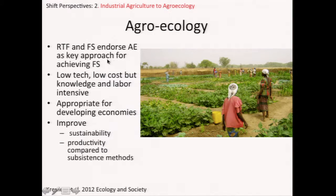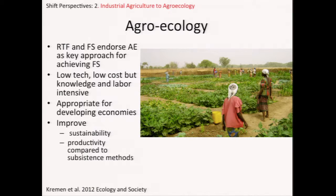I want to talk about shifting perspectives, moving from industrial agriculture to agroecology. What is really appropriate about agroecology for these movements is that agroecological methods tend to be low technology and low cost, but very knowledge and labor intensive. So they're very appropriate for developing economies where there's often lots of labor but not lots of technology or money to purchase inputs. Agroecological methods can really improve on the sustainability of farming systems and greatly improve productivity compared to subsistence methods, sometimes stacking up better than conventional agricultural systems.